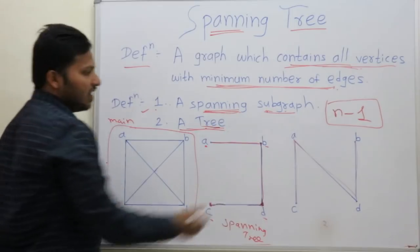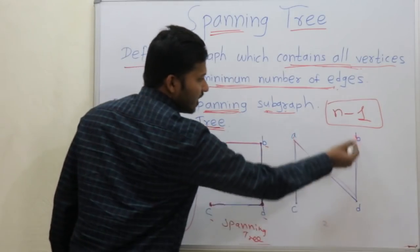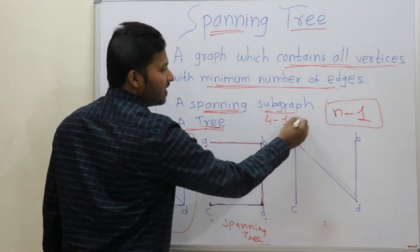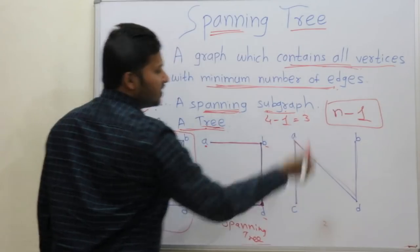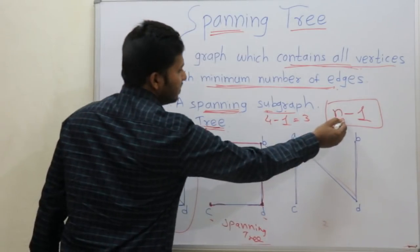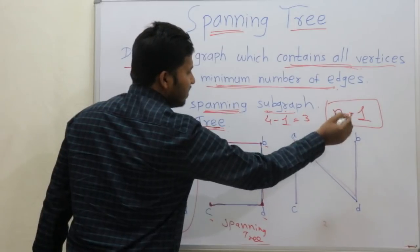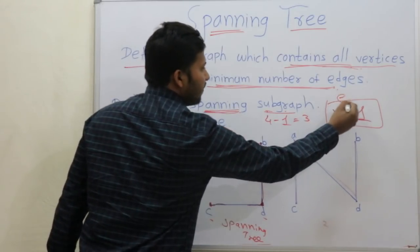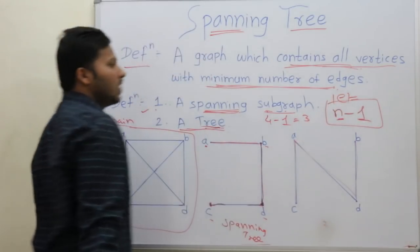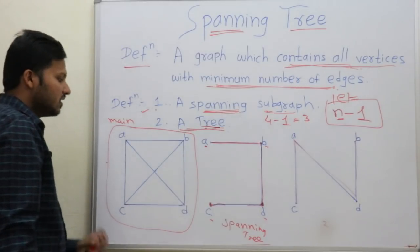If there are n vertices — that is 4 vertices here — then the edges should be 4 minus 1, that is 3. So if the number of vertices are n, then number of edges will be n minus 1. This is the condition.